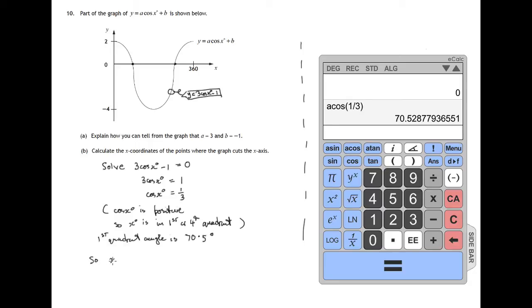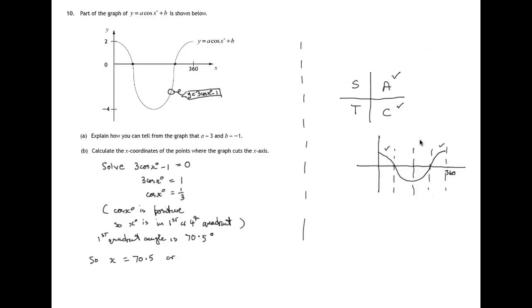So x, the value of x, we're allowed the first quadrant angle. We also need a fourth quadrant angle, which is 360 minus the first quadrant angle.